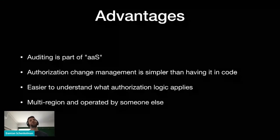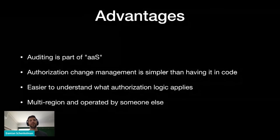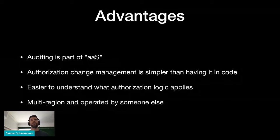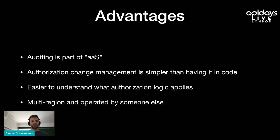The advantages here are that auditing becomes part of the service. Authorization change management is simpler because you handle all of this through the API and don't need to have this in your code. It's easy to understand what logic applies because you have this all in your namespaces configuration, which is your authorization model, and it's multi-region and operated by someone else.